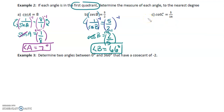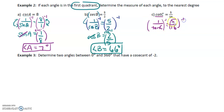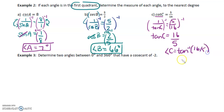For cotangent, we can't work with it directly, so rewrite cotangent as one over tan c, and rewrite the right side as five over 16. Raising both sides to the negative one — just reciprocate: tan c equals 16 over five. So angle c equals tan inverse of 16 over five, which gives us 73 degrees.